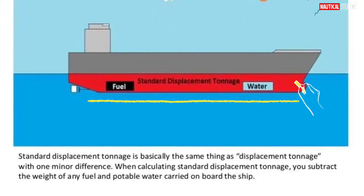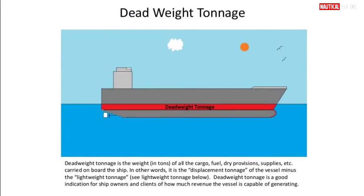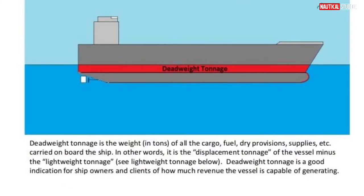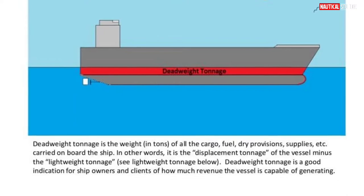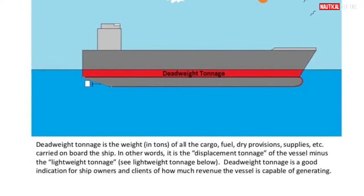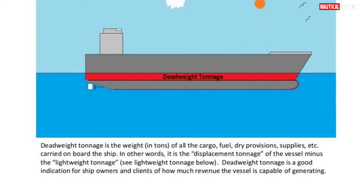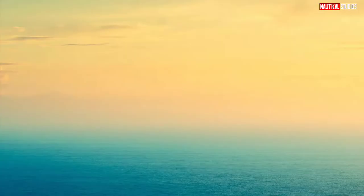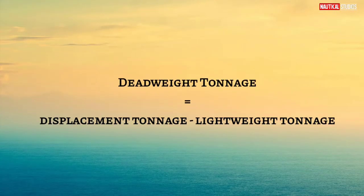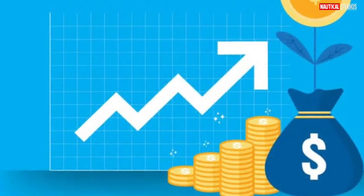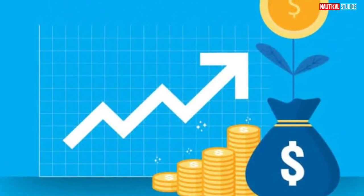Dead weight tonnage is the weight in tons of all the cargo, fuel, dry provisions, supplies, etc. carried on board the ship. In other words, it is the displacement tonnage of the vessel minus the lightweight tonnage.